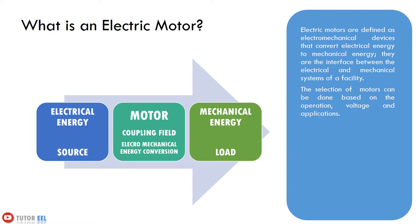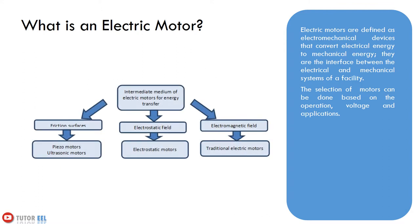The selection of these motors can be done based on the operation, voltage, and applications. Based on coupling field, electric motors can be categorized into three categories: the electrostatic, piezoelectric, and electromagnetic versions. The electromagnetic version is more commonly used in different applications as compared to the other two categories.